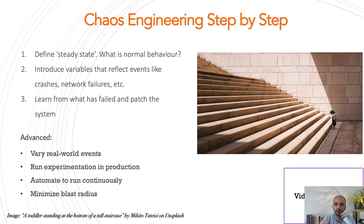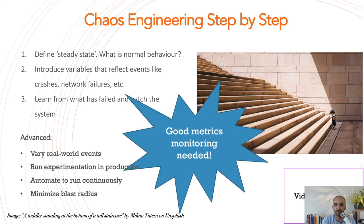The next step is to automate running these chaos experiments continuously — maybe once per day, two or three times, or with each application promotion to production. The more confident you are in your practices — like limiting the blast radius and recovering quickly — the more you can automate it. After automating, you also need to create a feedback loop to your developers or dev managers so that the findings get incorporated into the code in the next release.